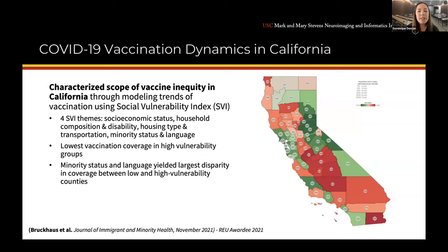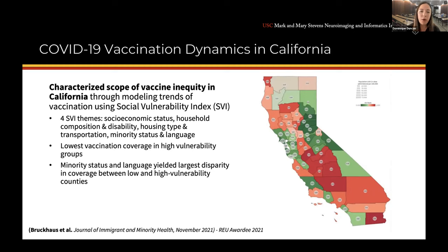Another project: Alex Bruckhaus is another REU awardee. This work was published in the Journal of Immigrant and Minority Health. He and other students looked at vaccination dynamics in California using the Social Vulnerability Index. They examined four SVI themes: socioeconomic status, household composition and disability, housing type and transportation, and minority status and language. They found that the lowest vaccination coverage was in high vulnerability groups, and that minority status and language yielded the largest disparity in coverage between low and high vulnerability counties.